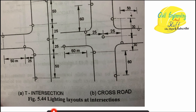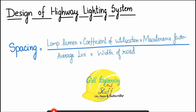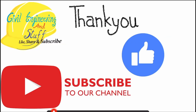These are the IRC specifications for the lighting layout at intersections as well. The spacing can also be determined using the formula: average lamp luminous output multiplied by the coefficient of utilization multiplied by the maintenance factor, divided by the average lux multiplied by the width of the road. This formula can be used for design, particularly when installing lights on irregular topography.